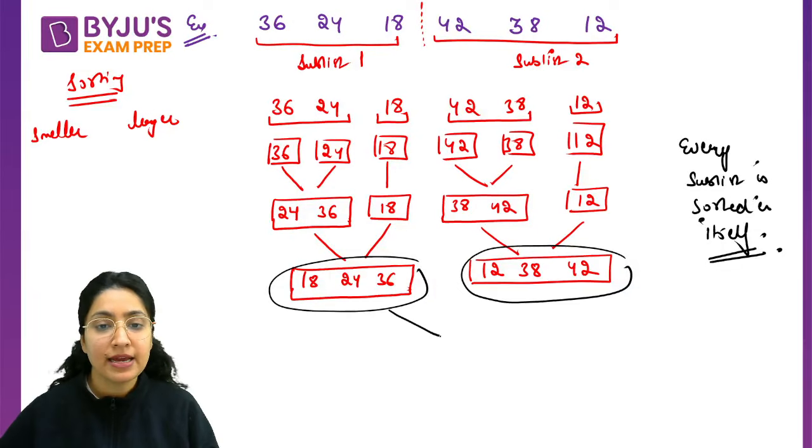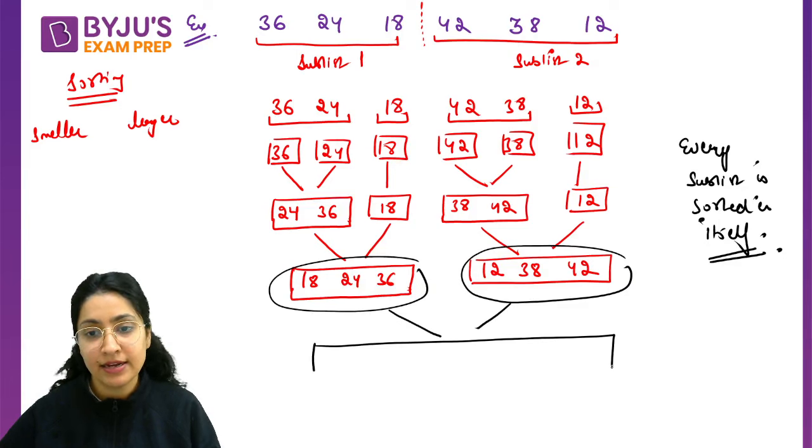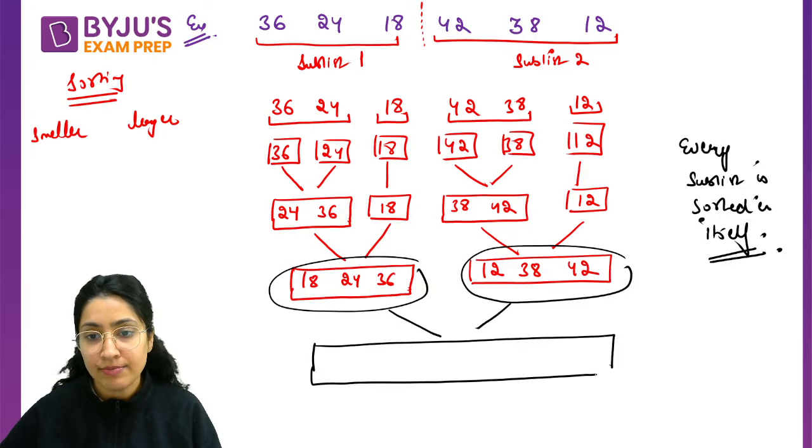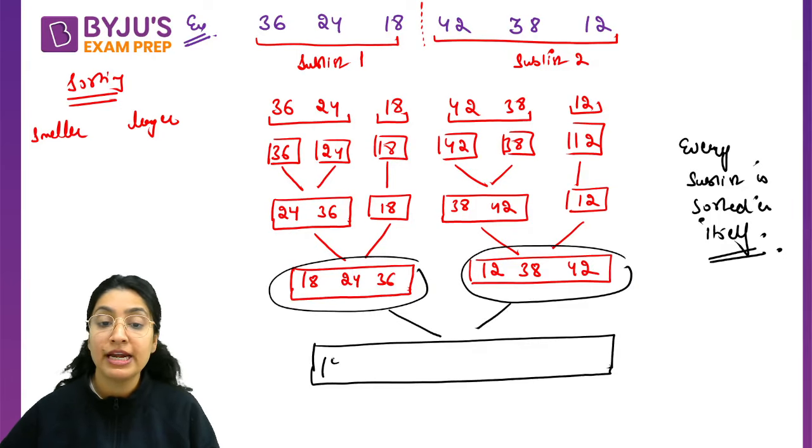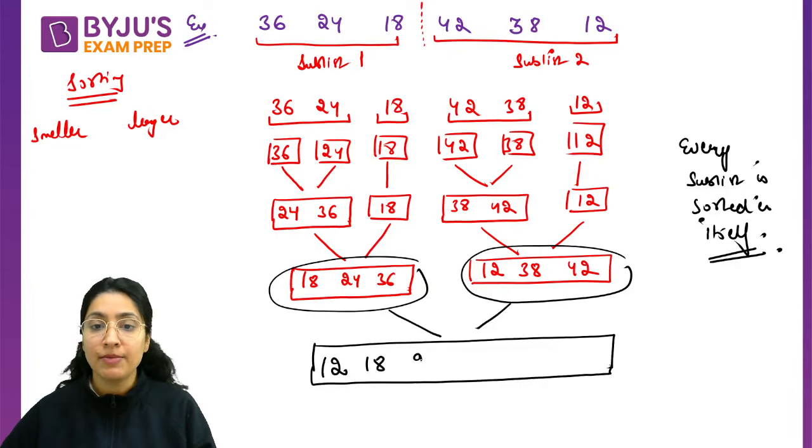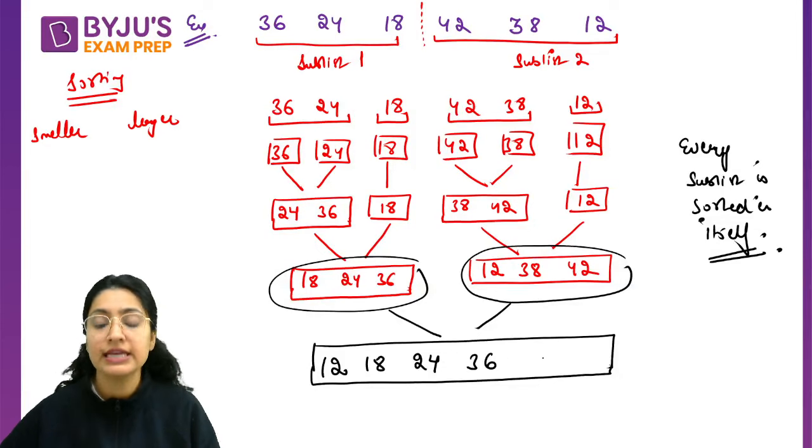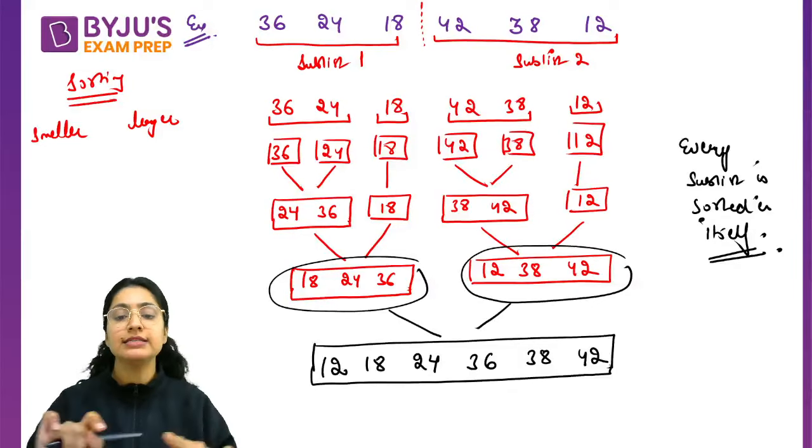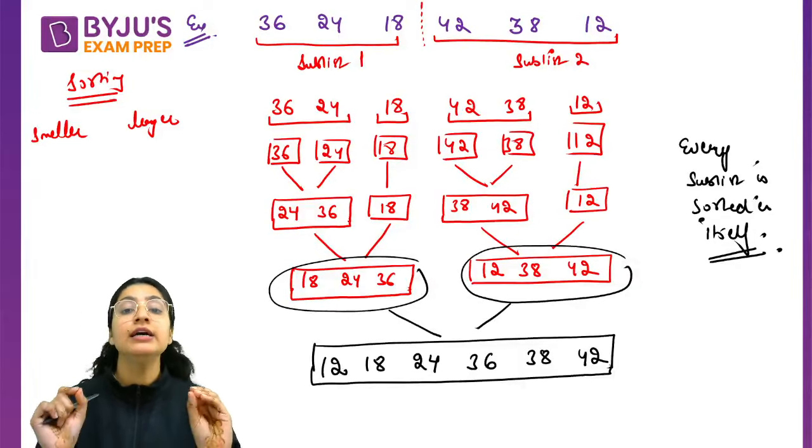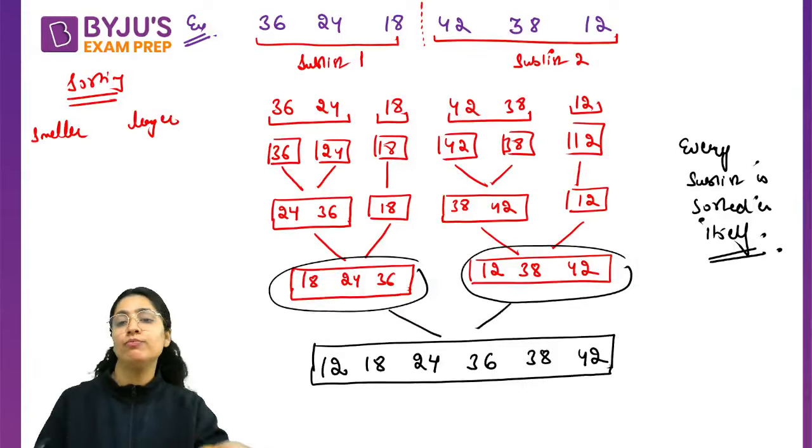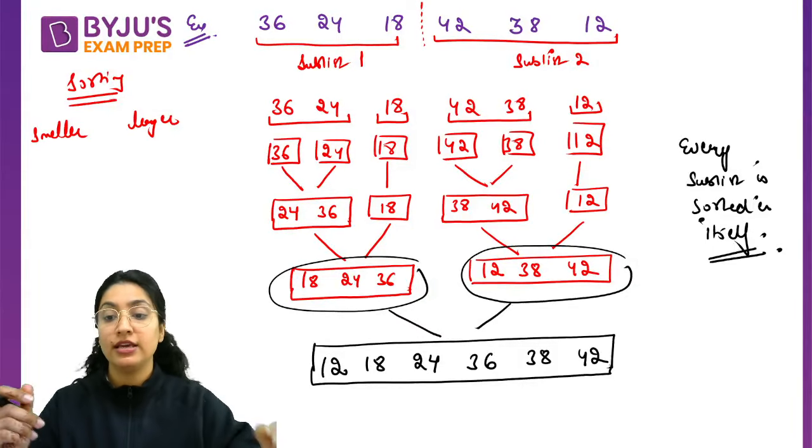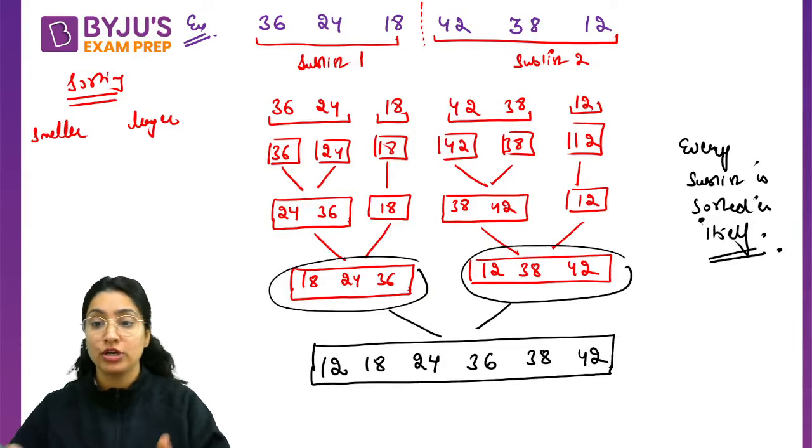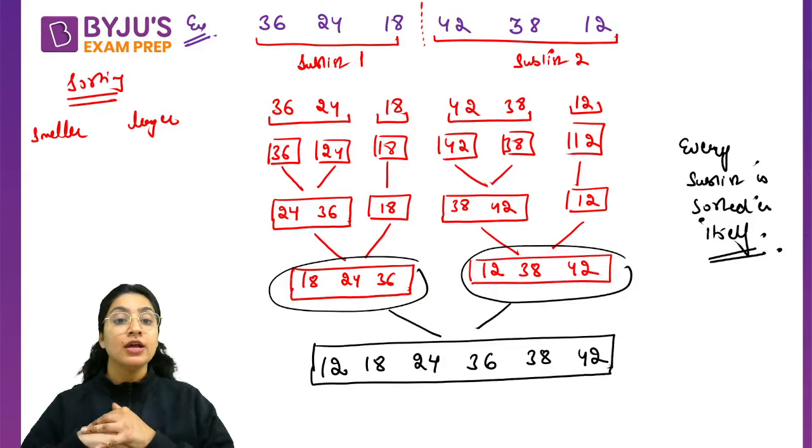Finally, now you combine these. Your final answer will be produced. How did we keep the data in final answer? First comes 12, then comes 18, then 24, then 36, then 38, and then 42. You will get this as the final sorted data. But this is clear by looking - 12 is smaller so left, 18 is larger so right. But practically how does this work?